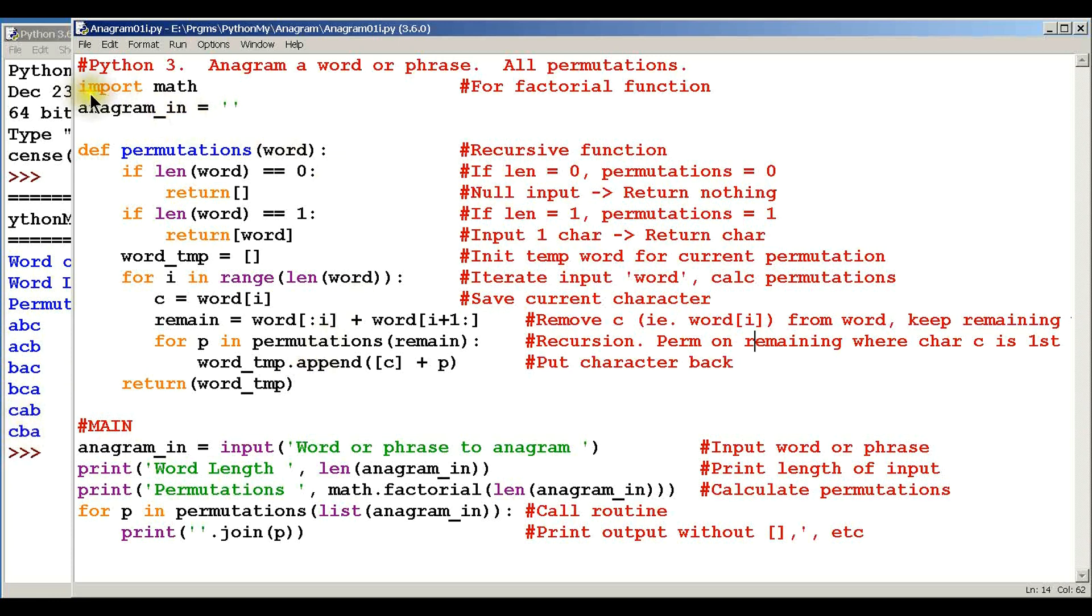The first thing we need to do is import the math library because we need the factorial function. Then we need to create a variable to store the word or phrase that the user gives us, and we set it to nothing.